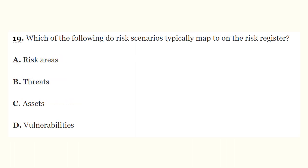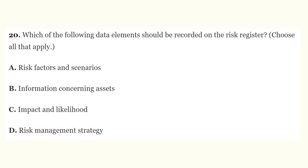Question 19: Which of the following do risk scenarios typically map to on the risk register? The correct answer is assets. Question 20: Which of the following data elements should be recorded on the risk register — choose all that apply? The correct answers are risk factors and scenarios, information concerning assets, and impact and likelihood.